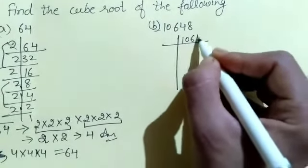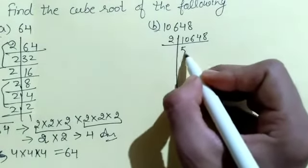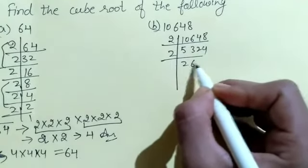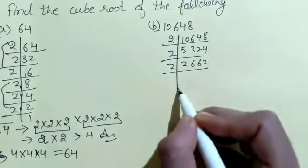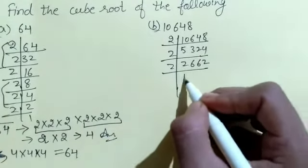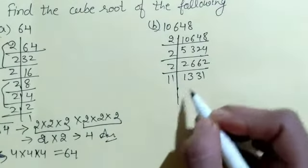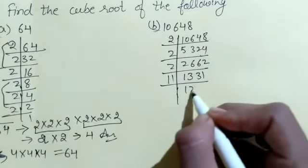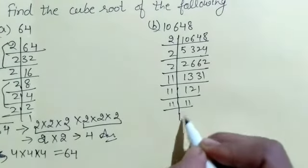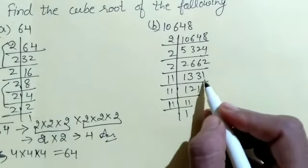After that, for problem (b) 106418, we will divide the number by 2 repeatedly. Again 2, again 2, again 2, continuing until we can't divide by 2 anymore.